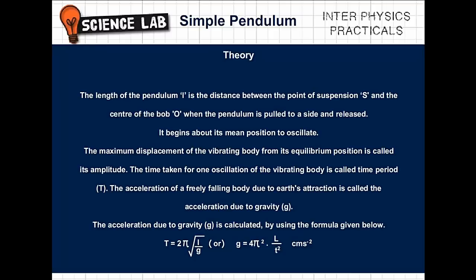The time taken for one oscillation of the vibrating body is called time period T. The acceleration of a freely falling body due to earth's attraction is called the acceleration due to gravity g. The acceleration due to gravity g is calculated by using the formula: T = 2π√(L/g) or g = 4π²L/T² cm/s².